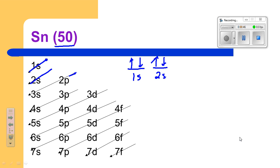Next comes 2p. Now for p, that's 3 little orbitals. I'm going to bracket them together. And those get 6 electrons, 2 per orbital.